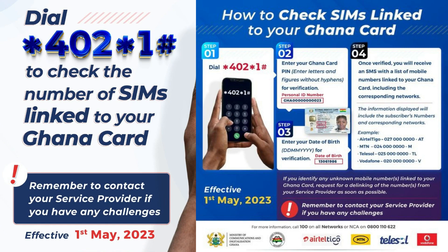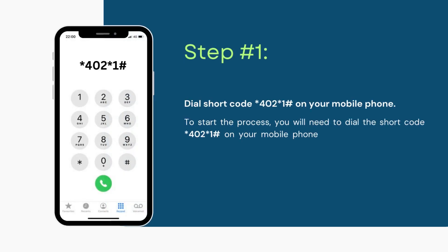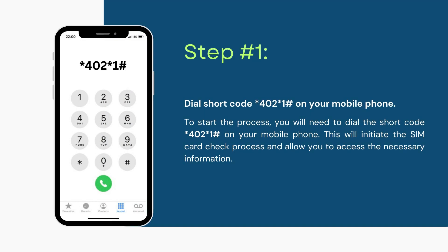Step number 1: Dial short code *402*1# on your mobile phone. To start the process, you need to dial the short code *402*1# on your mobile phone. This will initiate the SIM card check process and allow you to access the necessary information.